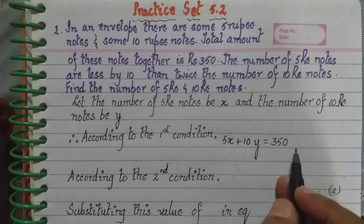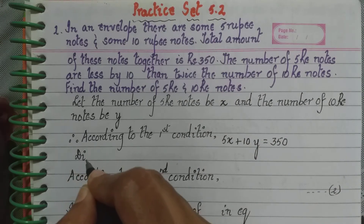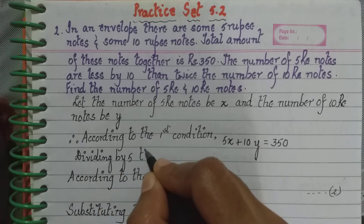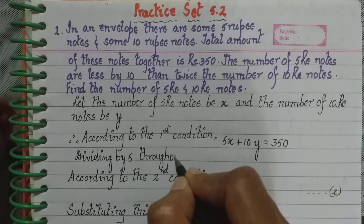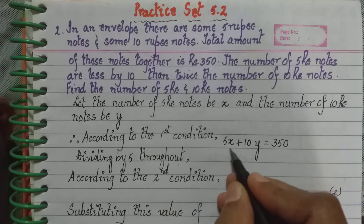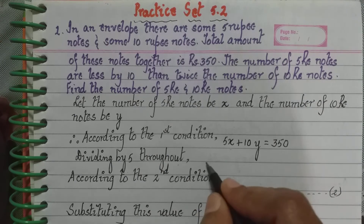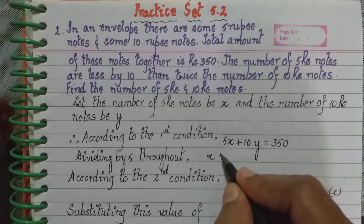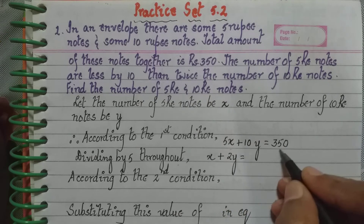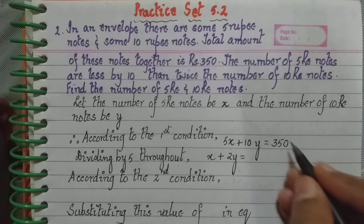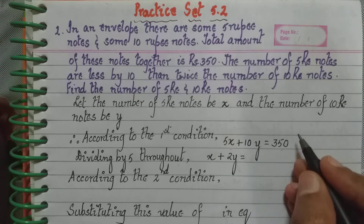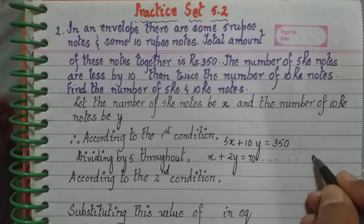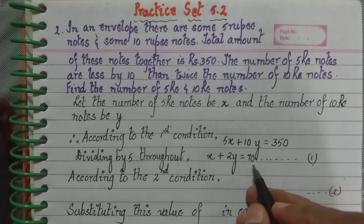I notice that 5 goes into each term of the equation. So dividing throughout by 5: 5X ÷ 5 = X, 10Y ÷ 5 = 2Y, and 350 ÷ 5 = 70. So the reduced first equation becomes X + 2Y = 70.